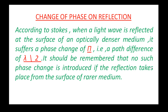When light reflects from an optically denser medium, the phase value changes by pi — meaning pi increases or decreases, just changes. If the phase changes by pi, then the path difference also changes, and lambda by 2 is the corresponding change.